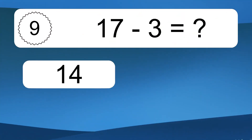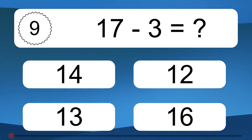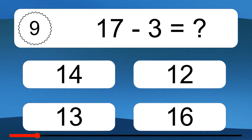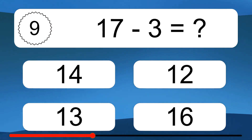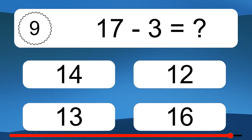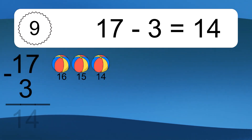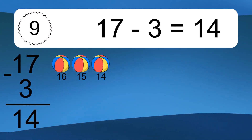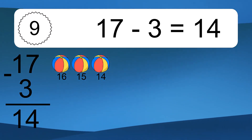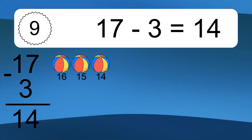17 minus 3 equals what? 17 minus 3 equals 14. Let's count it. 16, 15, 14.